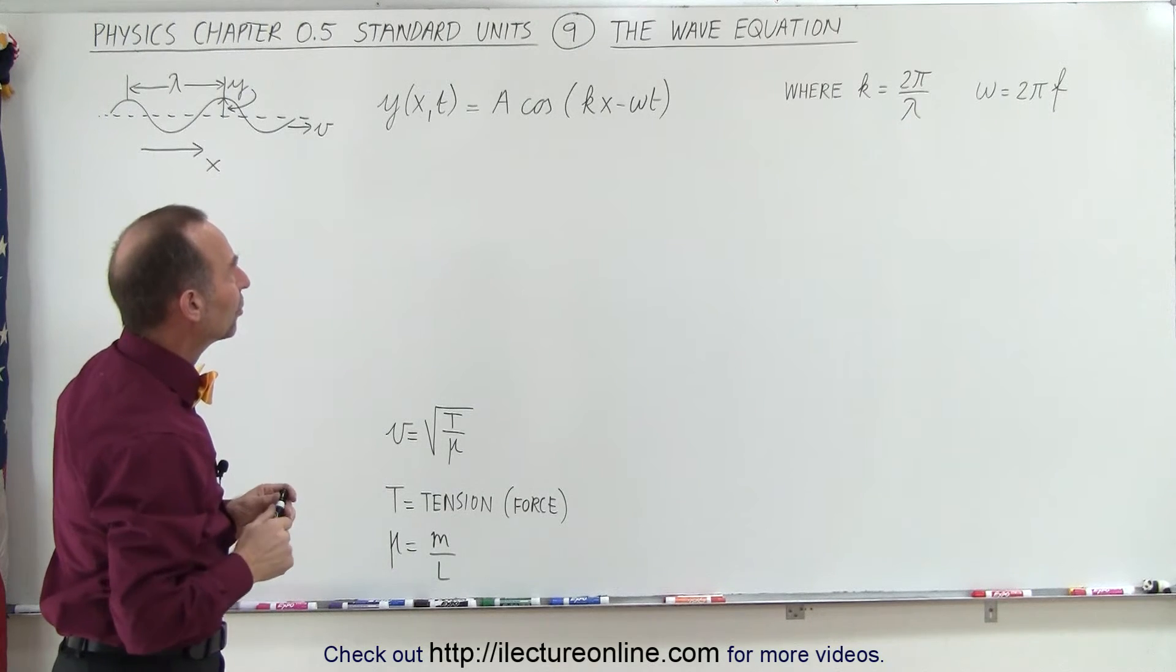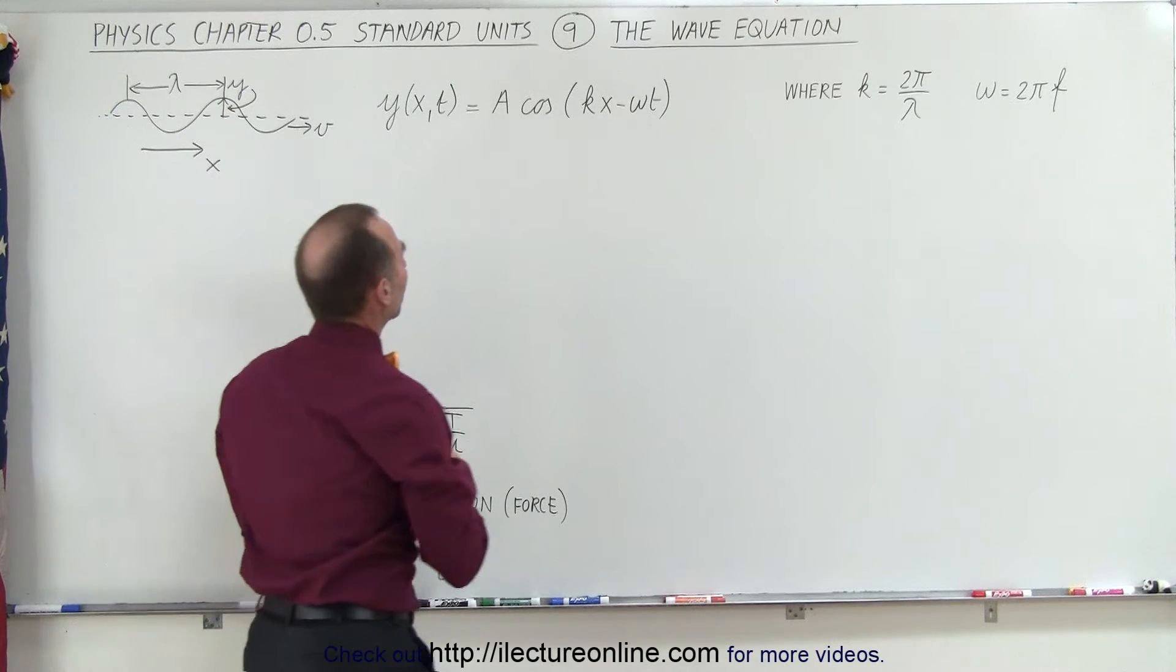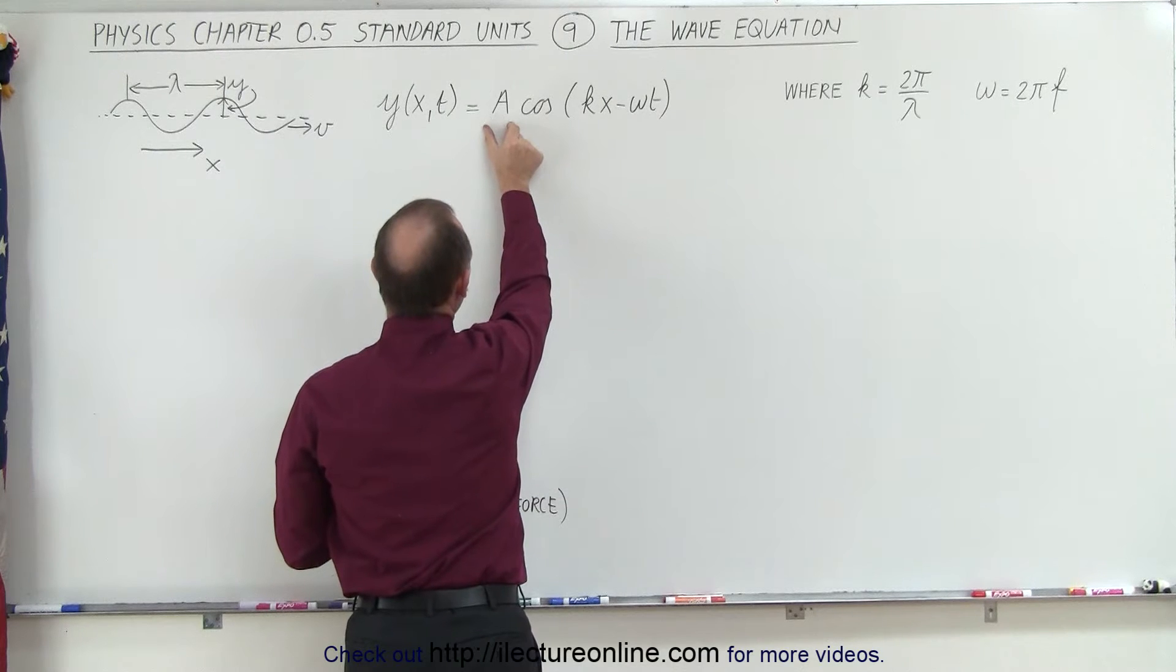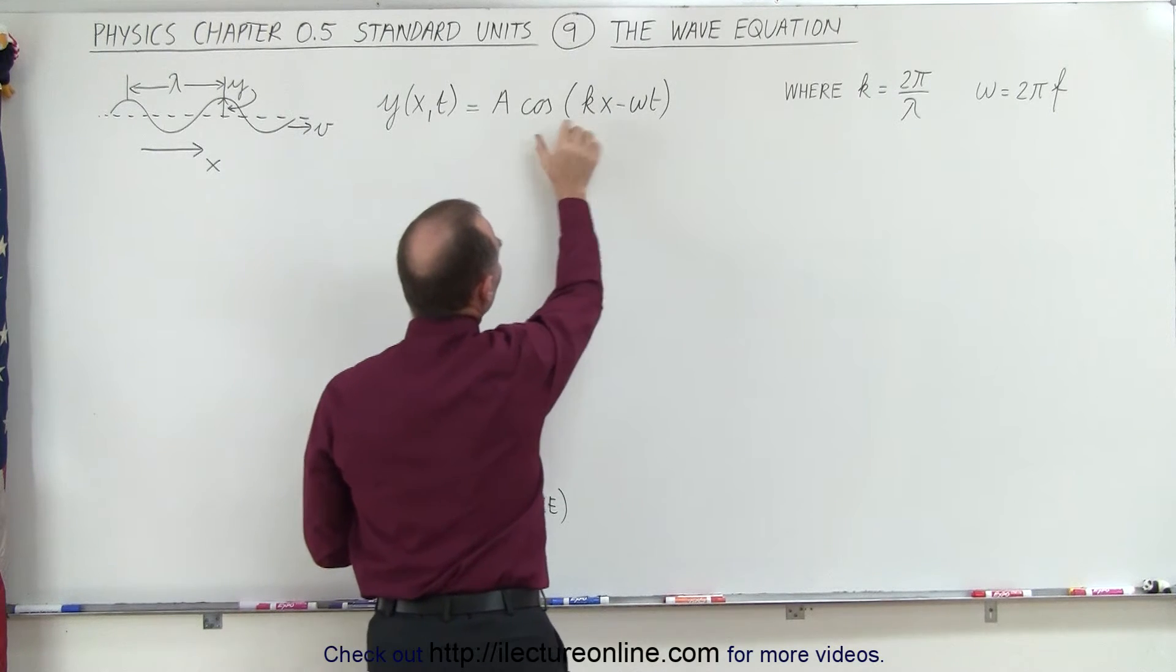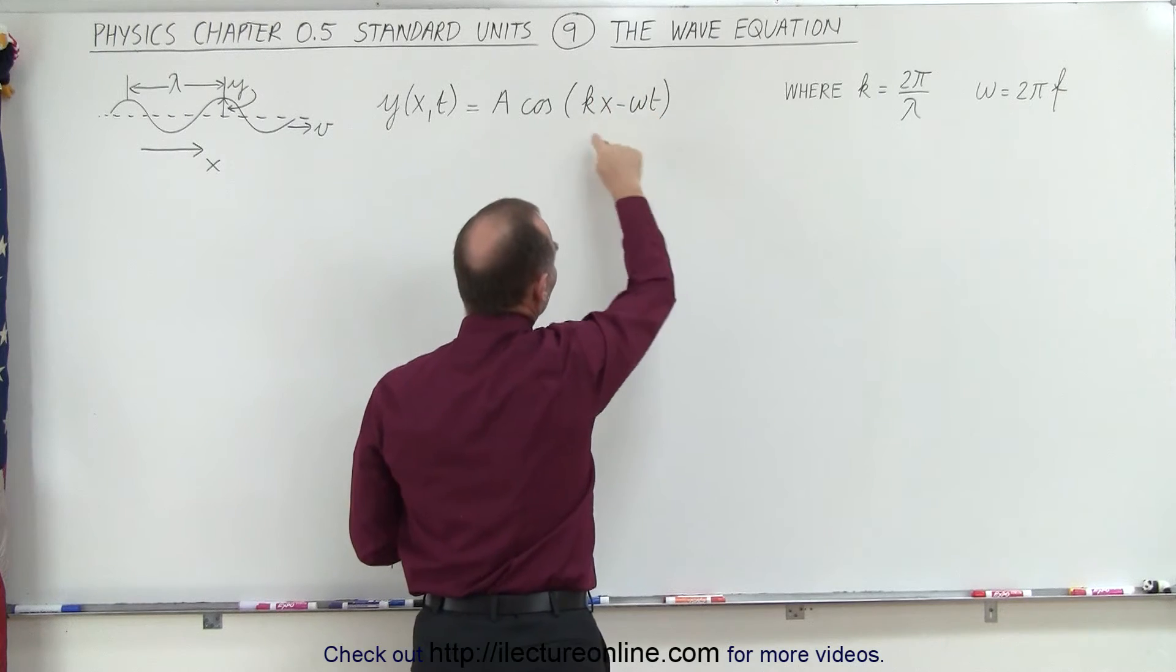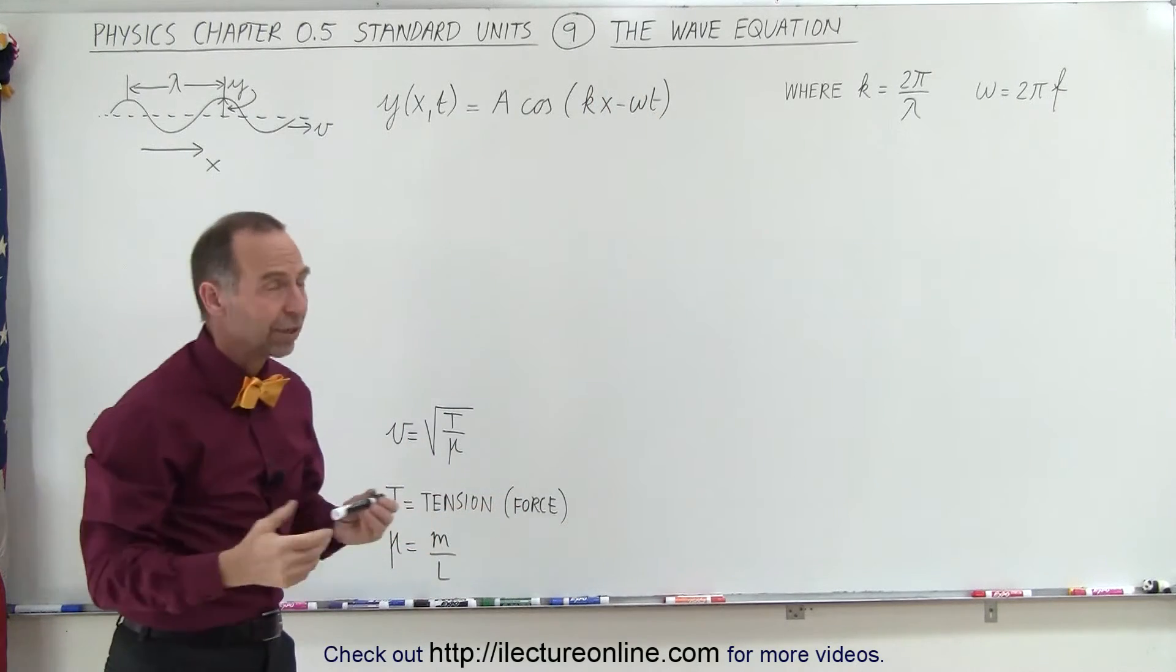So what we're primarily concerned about is the units. So we have a, which is amplitude that has units of meters times the cosine of this. So what are the units of what's inside here? Well let's figure it out.